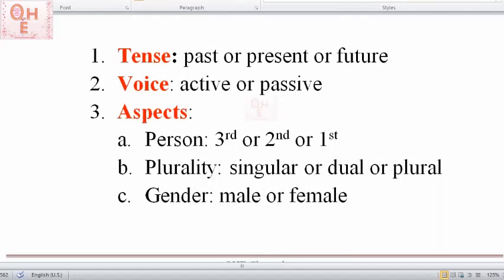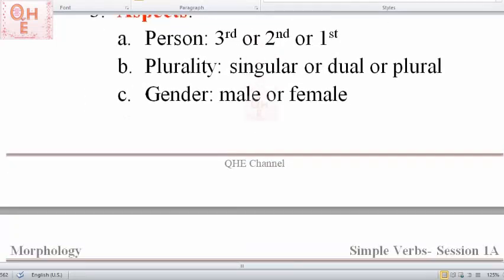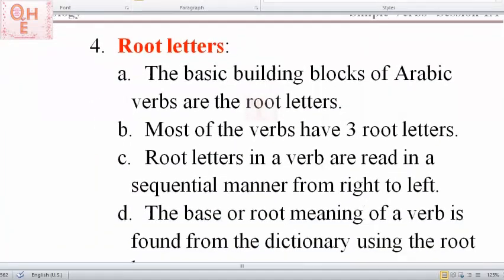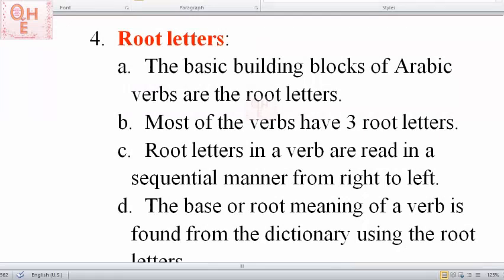Looking at the pattern you will also know the aspects of the verbs. The aspects contain person, plurality, and gender. So looking at the aspect you can tell whether the doer or the subject is third person, second person, or first person. You can also tell whether the doer or subject is singular, dual, or plural, and whether the doer or subject is male or female. You can also tell what are the root letters of the verb.